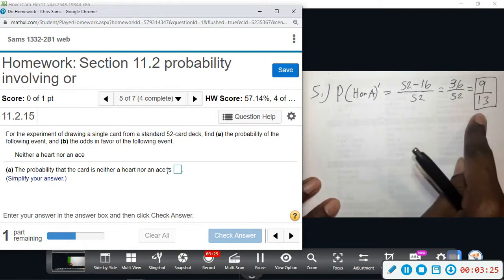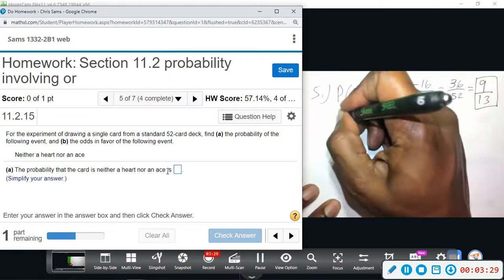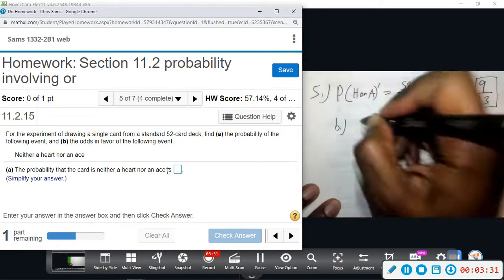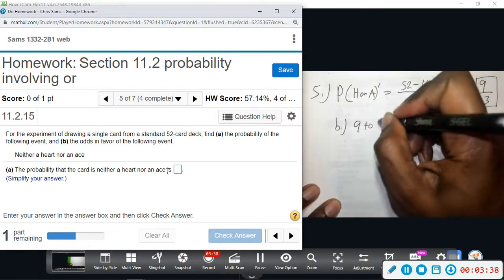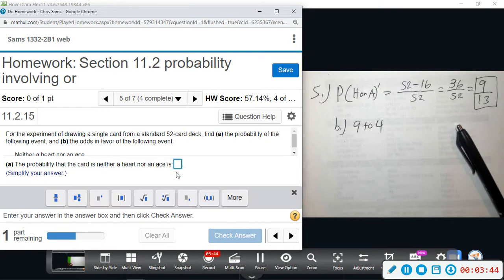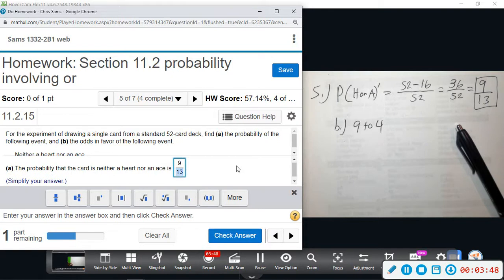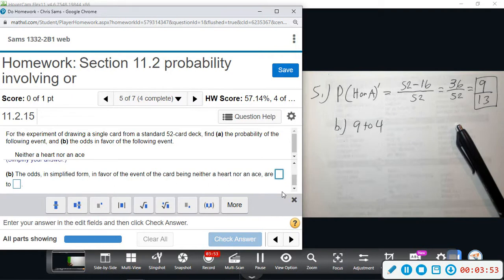So 9 out of 13 is the probability that we do not get a heart or ace. The odds, so part b, the odds would be 9, and then 13 take away 9. 13 minus 9 will give us 4, so 9 to 4 will be our odds. So 9 divided by 13, and odds will be 9 to 4.